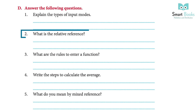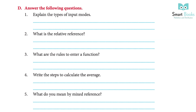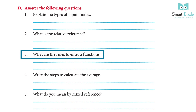2 — What is relative reference? When a formula is copied from one cell to another, the value in the copied cell automatically gets changed. 3 — What are the rules to enter a function? A — all Excel functions must begin with an equal sign. B — the function name must be a valid Excel name. C — open and close parentheses must be placed after the function. D — arguments must be enclosed in parentheses.